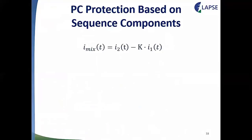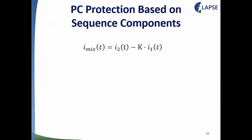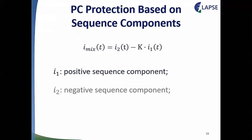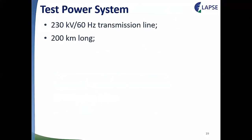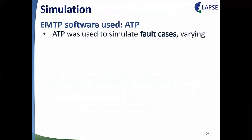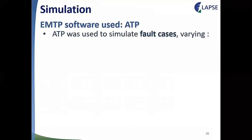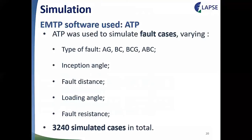To highlight the benefits of PC-TDQ, in addition to comparison with the traditional PC function, a comparison with PC protection based on sequence components (PC-mix) was also performed. A mixed signal composed of negative and positive sequence components was used, where I1 is the positive sequence component, I2 is the negative sequence component, and K is the alpha factor. The test power system is a 230 kV, 60 Hz transmission line of 200 km modeled with distributed parameters in ATP. The ATP was used to simulate fault cases varying fault type, inception angle, fault location, loading angle, and fault resistance — totaling 3,240 simulated cases.